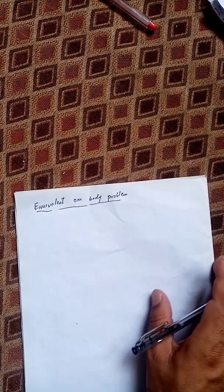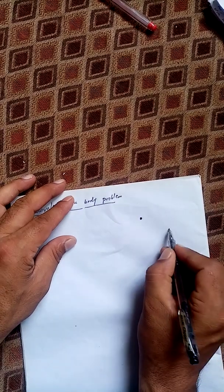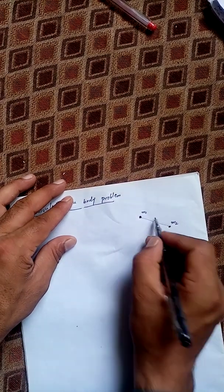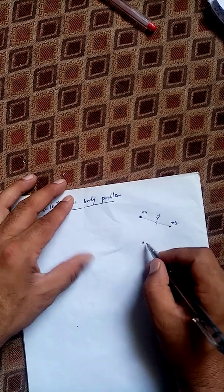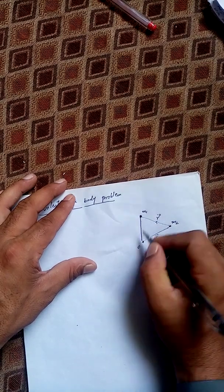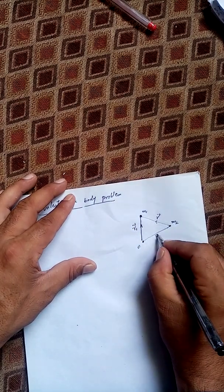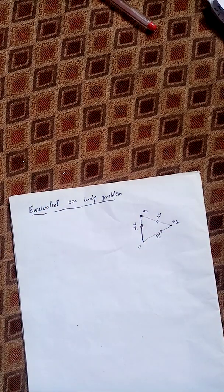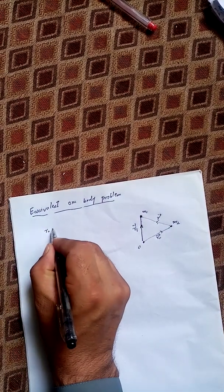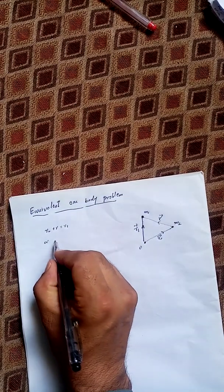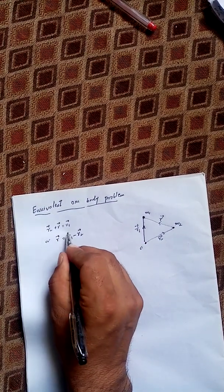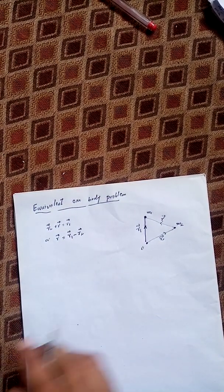In this video we will discuss the equivalent one-body problem. Suppose we have two point masses m1 and m2 separated by a distance r. We have an origin, the distance from the origin to mass m2 is r2, and from the origin to mass m1 is r1. By the head-to-tail rule of vector addition we have r2 plus r equals r1, or r equals r1 minus r2.